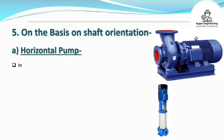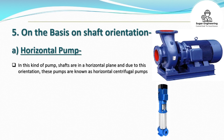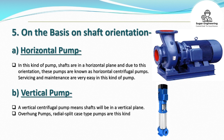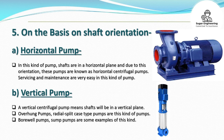On the basis of shaft orientation: A. Horizontal pump — in this kind of pump, the shaft is in a horizontal plane, and due to this orientation these pumps are known as horizontal centrifugal pumps. Servicing and maintenance are very easy. B. Vertical pump — a vertical centrifugal pump means the shaft is in a vertical plane. Overhung pumps and radial split case type pumps are this kind. Borewell pumps and sump pumps are some examples.